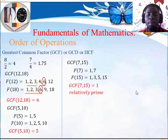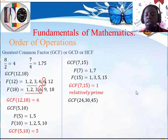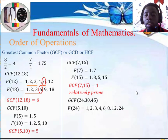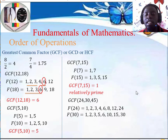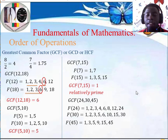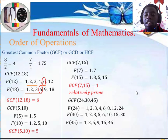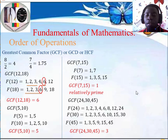Let's take another example with three numbers: 24, 30, and 45. What is the greatest common factor? The factors of 24 are 1, 2, 3, 4, 6, 8, 12, and 24. The factors of 30 are 1, 2, 3, 5, 6, 10, 15, and 30. The factors of 45 are 1, 3, 5, 9, 15, and 45. Looking at the factors that are common among all three, the greatest common factor is 3. So the GCF of 24, 30, and 45 is 3.